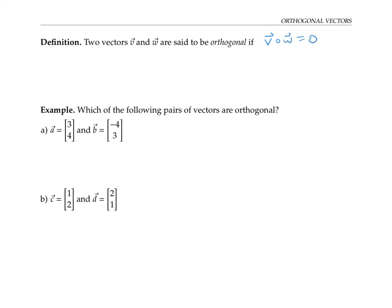Please pause the video for a moment and see which of these two pairs of vectors are orthogonal. For the first pair, if we take A dot B, that's three times negative four plus four times three, that works out to negative twelve plus twelve, which is zero. So yes, they are orthogonal.